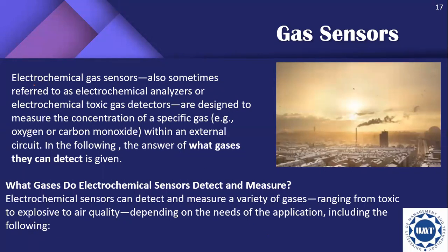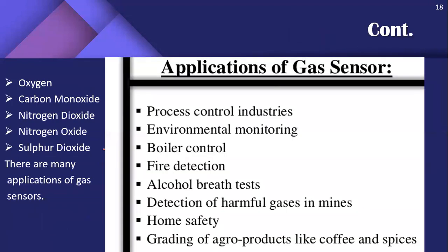Gas sensors are also referred to as electrochemical analyzers or electrochemical toxic gas detectors, designed to measure the concentrations of specific gases such as oxygen or carbon monoxide within an external circuit. Electrochemical sensors can detect and measure a variety of gases including oxygen, carbon monoxide, nitrogen dioxide, and sulfur dioxide.